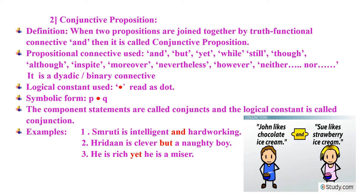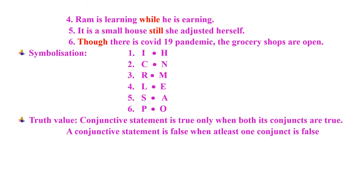Now let us take examples. First: 'Smruti is intelligent and hardworking' — 'Smruti is intelligent' is one conjunct, 'hardworking' is another, and the conjunction is 'and.' Second: 'Ridan is clever but a naughty boy' — 'Ridan is clever' is the first conjunct, 'a naughty boy' is the second, and the conjunction is 'but.' Third: 'He is rich yet he is a miser' — 'he is rich' is the first conjunct, 'he is a miser' is the second, and 'yet' is the conjunction. Fourth: 'Ram is learning while he is earning' — 'while' is the conjunction, 'Ram is learning' is the first conjunct, and 'he is earning' is the second conjunct.